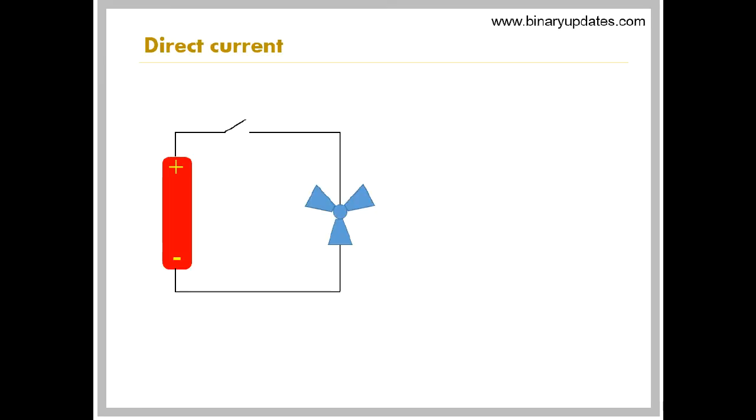Let's consider a circuit consisting of DC motor and DC power source. Here polarity is very important for source as well as motor. When switch is closed motor starts rotating in clockwise direction. Look at the graph. The voltage is constant. But, as the power source is DC battery it will get discharged soon, as shown by dotted line. Here polarity defines the direction of current.